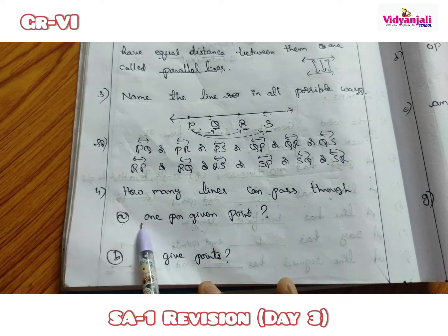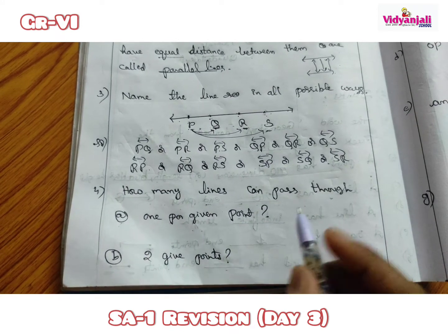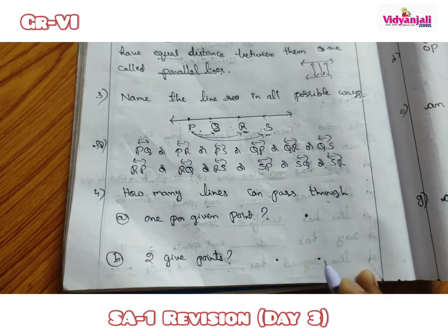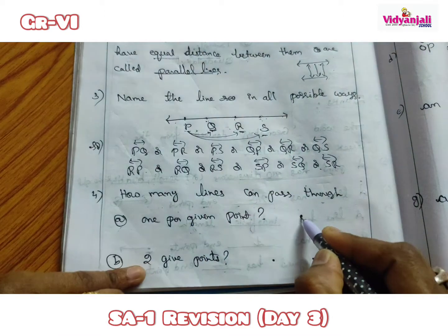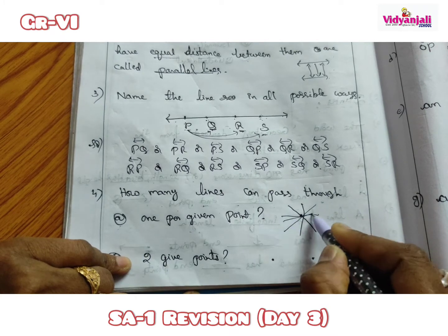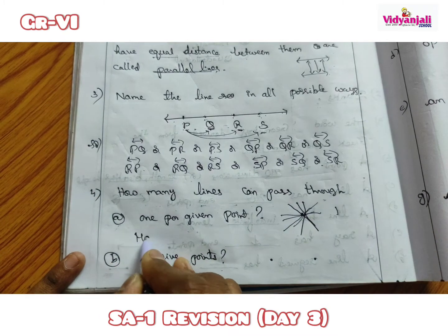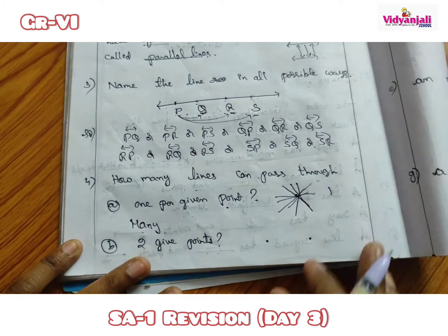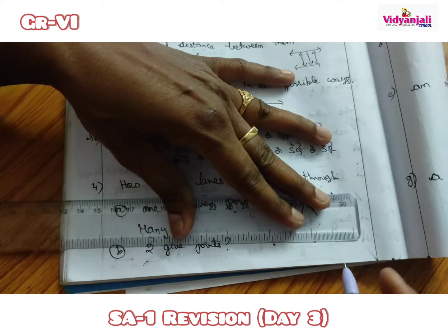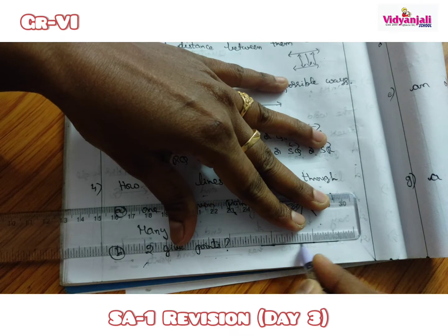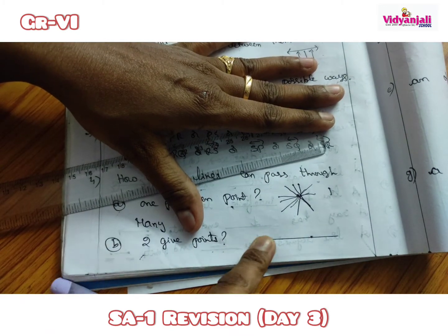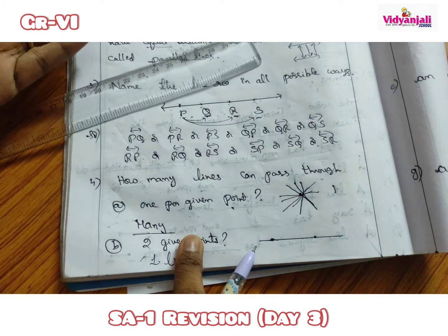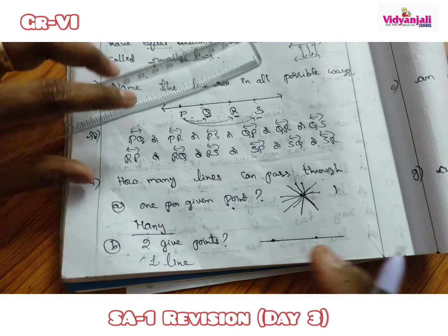Fourth question: how many lines can pass through one given point vs. two given points? If we have only one point, infinite — many lines can be drawn through it. If we have two points, only one unique line can be drawn through both of them.